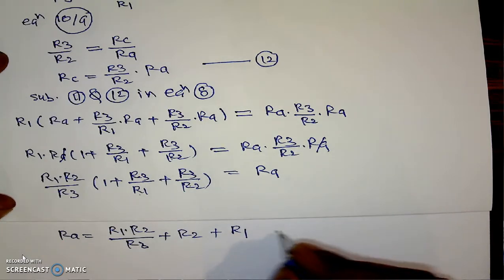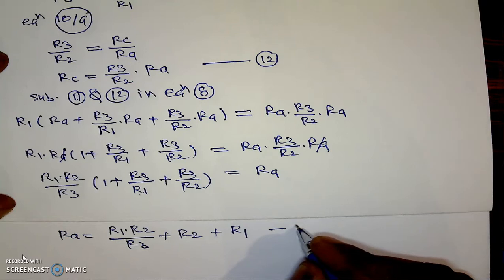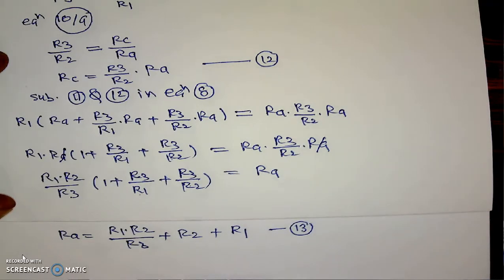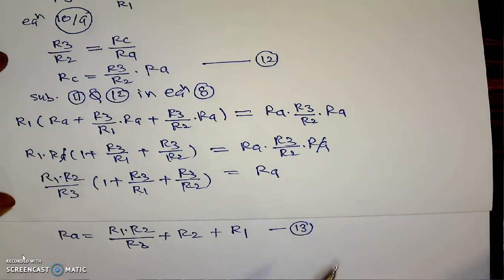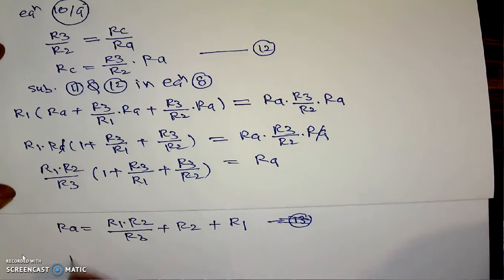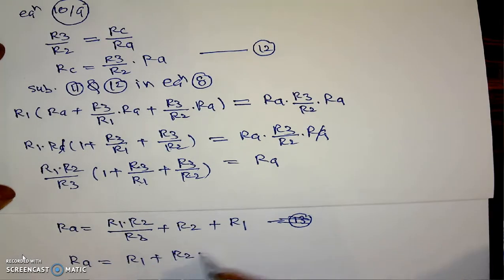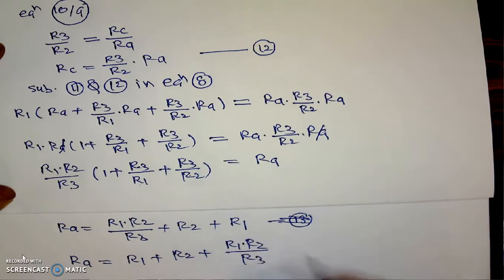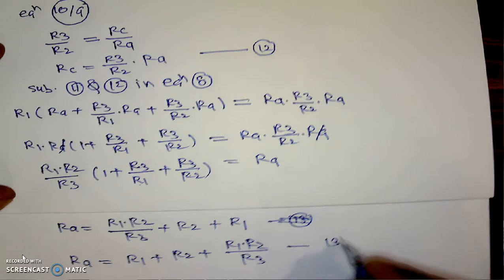We name this equation number 13. Just readjusting the terms — no new formula is applied. As a thumb rule, Ra equals R1 plus R2 plus R1 into R2 divided by R3. This is equation number 13.